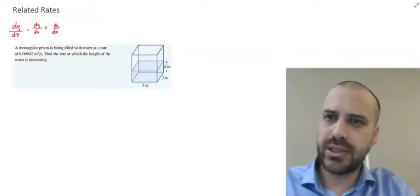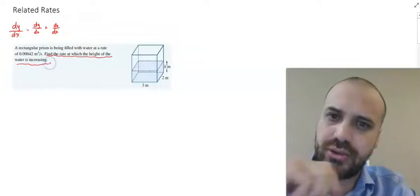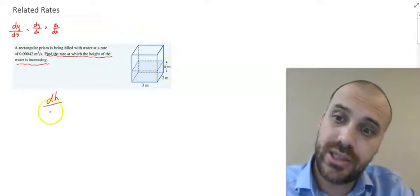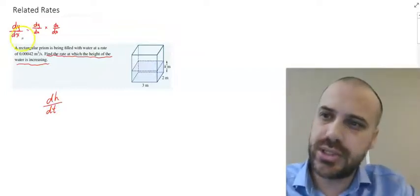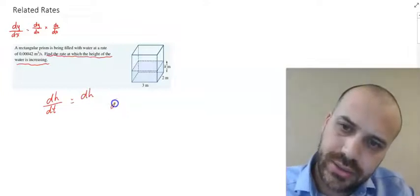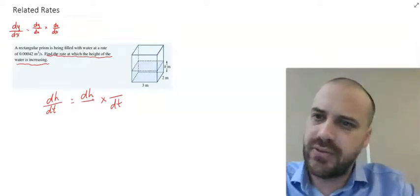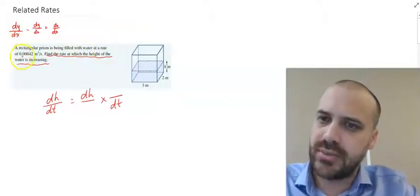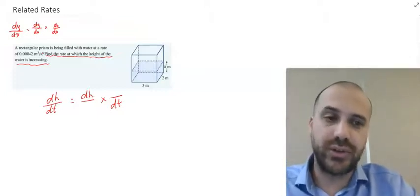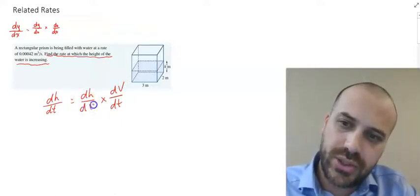Let's look at what the question is asking us for. It says find the rate at which the height of the water is increasing. The height is represented by h, so we're going to find the rate at which the height is increasing with respect to time. This is a related rates question, so it's going to involve the chain rule. We write out dh/dt, and we need a third variable — a rectangular prism is being filled with water at some rate in meters cubed per second, so the other variable is volume in meters cubed. That gives us dV/dt and dh/dV.